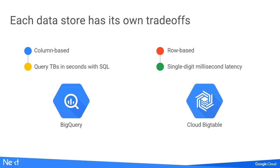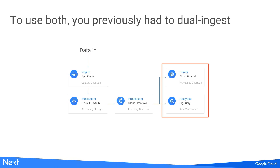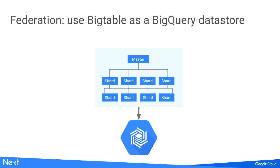Now the connector. Because BigQuery is column-based, it lets you query terabytes in seconds. Because Bigtable is row-based, it gives single-digit millisecond latency. Sometimes people want both, which is why we built this connector. Previously you had to dual-ingest — using pub/sub or Dataflow, writing into both systems, hoping they stay in sync, then routing programs to one or the other. The federated connector we're releasing today basically replaces the columnar I/O store at the bottom of the BigQuery diagram and puts Bigtable in there instead.